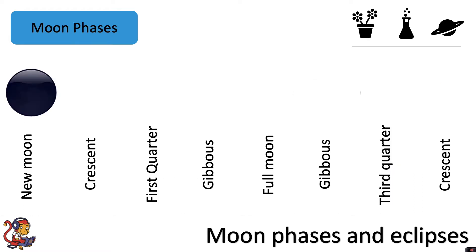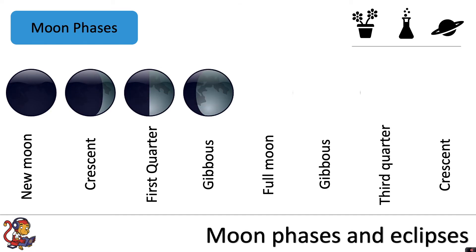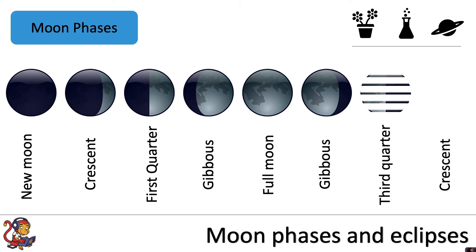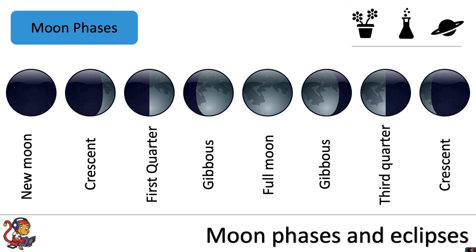So the different phases that we see are the new Moon, crescent Moon, first quarter Moon, gibbous, full Moon, another gibbous, third quarter Moon and another crescent Moon before the cycle is completed and you go back to the new Moon again.